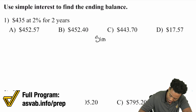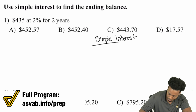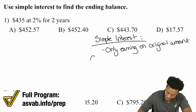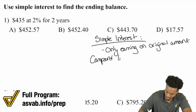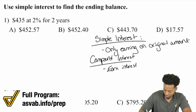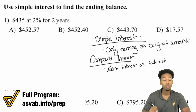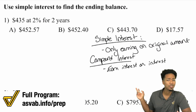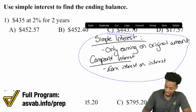So write this down and we're going to get started on these practice problems. Simple interest: you're basically only earning on the original amount. Compound interest stacks, it compounds on itself — you earn interest on interest. Basically what you earn counts toward what you will earn eventually; it all stacks on top of each other. So write that down. It's the basic principle, the basic idea. You've got to have that down.